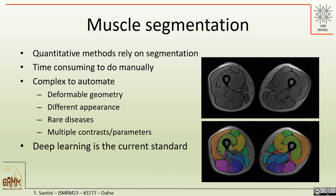Segmentation is a very important step in muscle imaging because a lot of quantitative methods rely on good segmentation. It is time consuming to do manually, and it is also hard to train good models because muscles have a deformable geometry, different appearance depending on the disease, and it is hard to get a good number of datasets because the diseases are rare, so getting a representative sample of subjects is not easy.